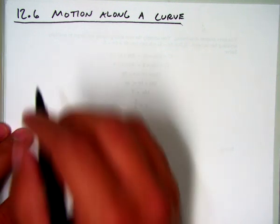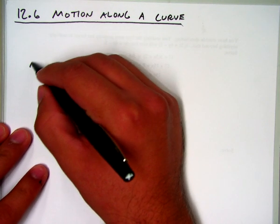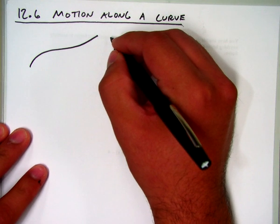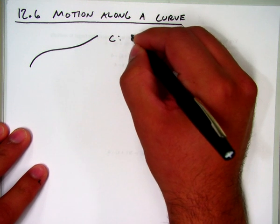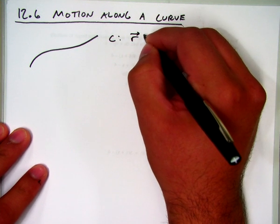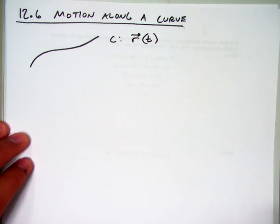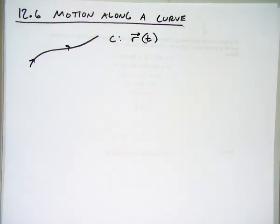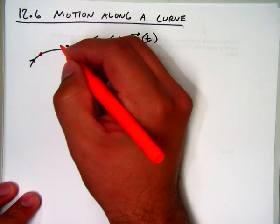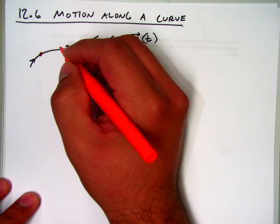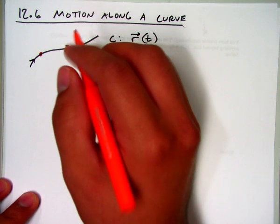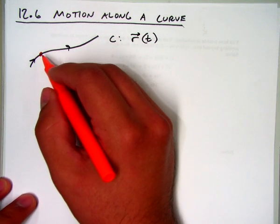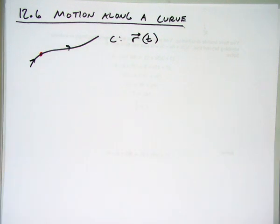So, the idea here is that we have a curve C, which is represented by vector-valued functions. Here's our curve C.